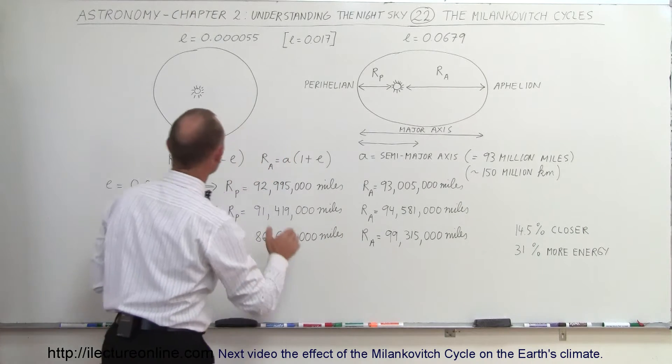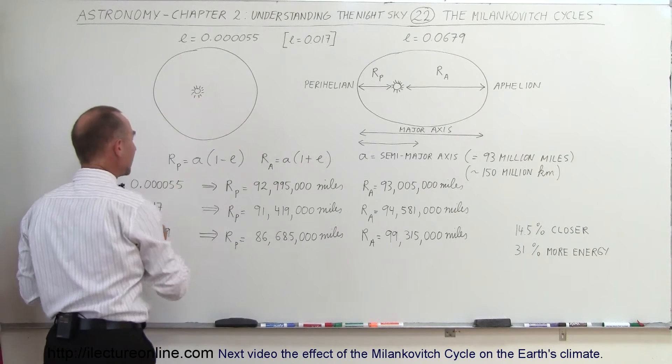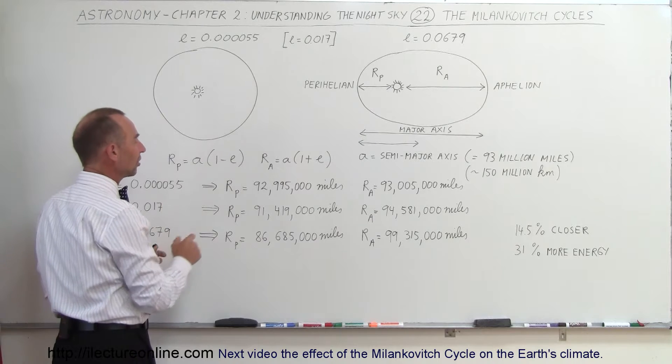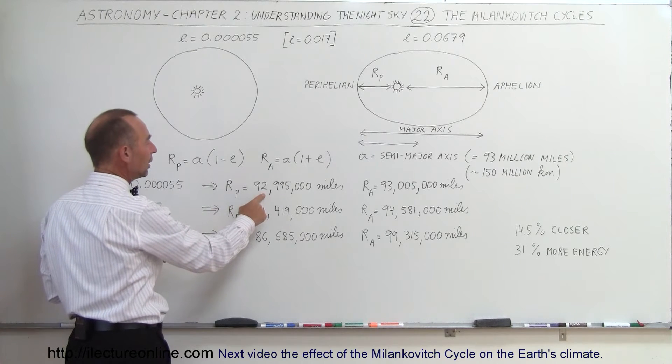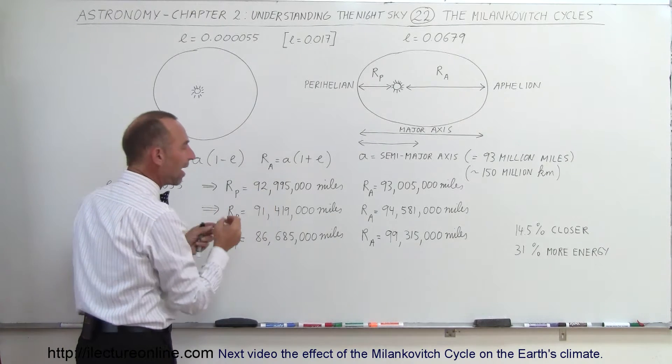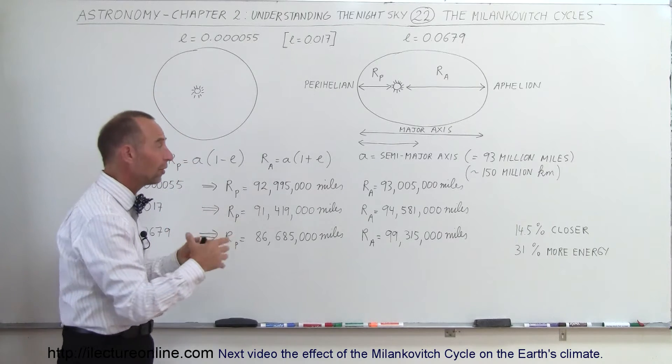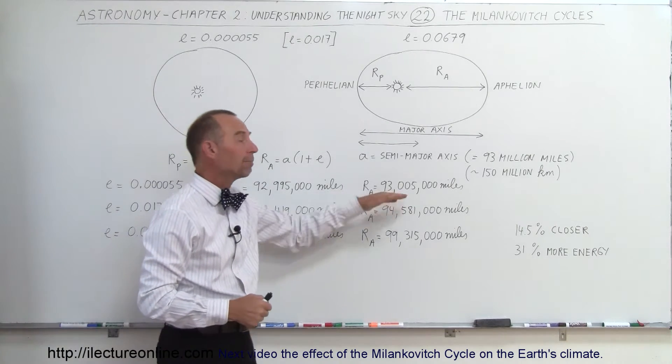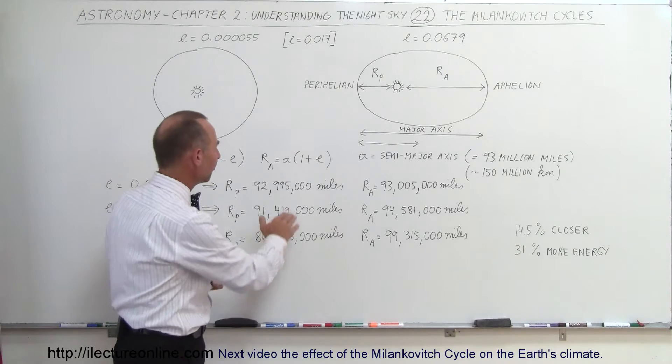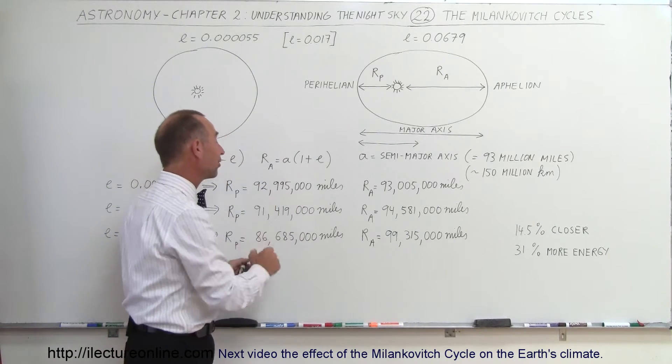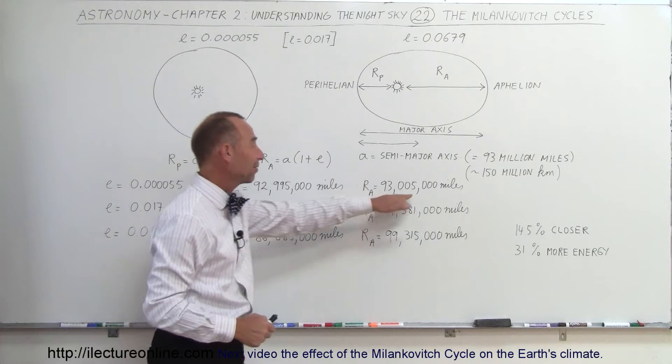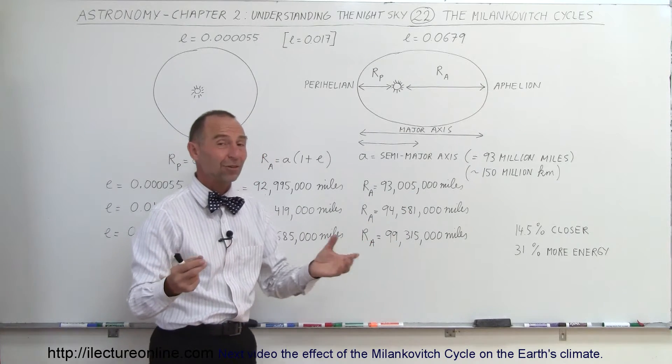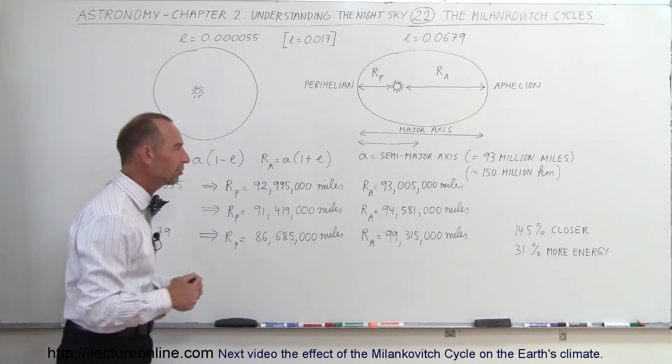And so what happens is, when the eccentricity is very low, the shape of the Earth's orbit is such that at perihelion, the Earth is only... let me correct myself, 5,000 miles closer to the Sun, and 5,000 miles farther away from the Sun than the average. So that's almost nearly circular.